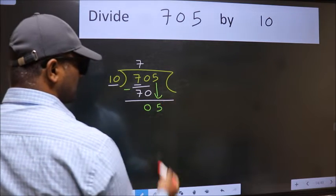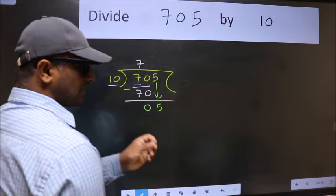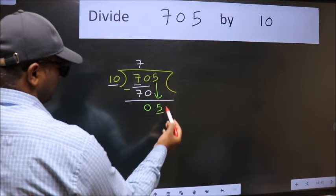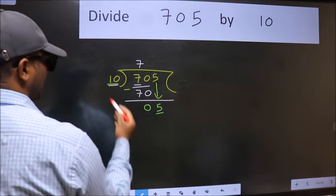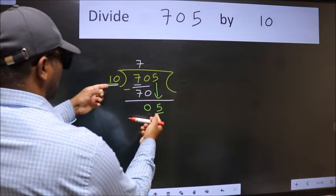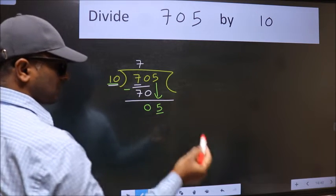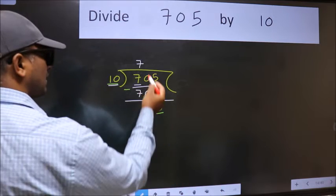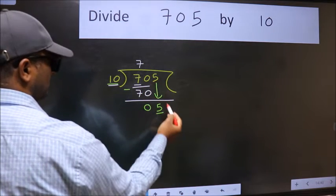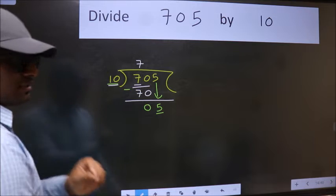After this step, the mistake happens. And the mistake is this. Here we have 5 and here 10. 5 is smaller than 10. So what many do is they directly put dot take 0 which is wrong.